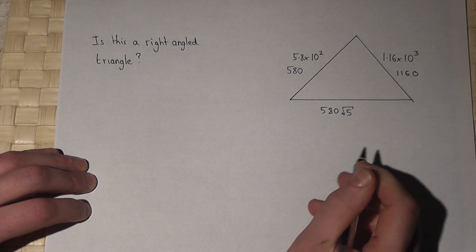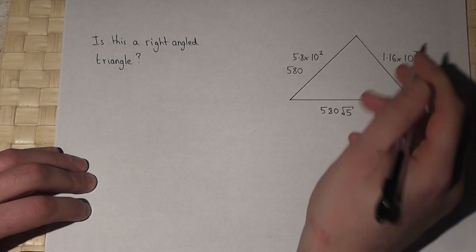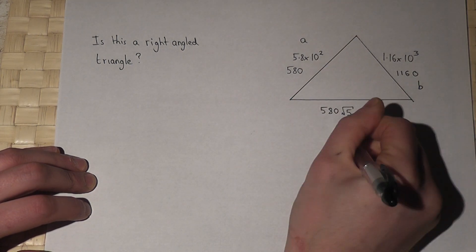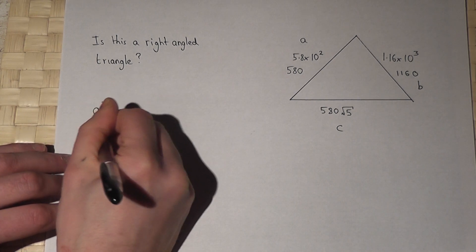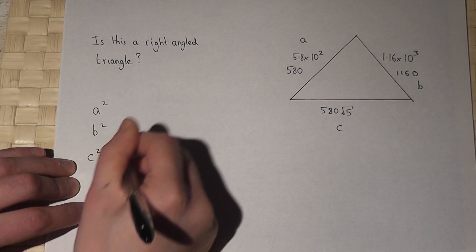I will leave that as a third. Now, if I call that, for the sake of it, a, b and c, I'm going to work out what a squared is, what b squared is and what c squared is.